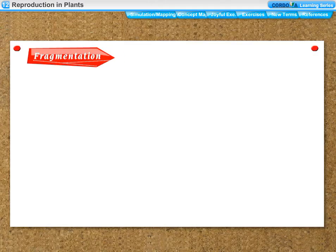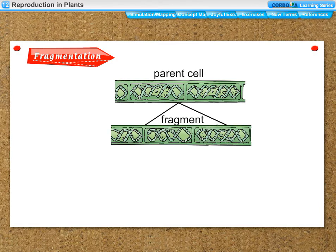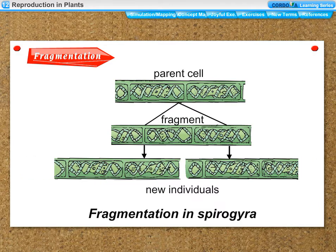Fragmentation: the breaking up of the body of a plant into two or more fragments, where each fragment grows and matures to form a new plant, is called fragmentation.